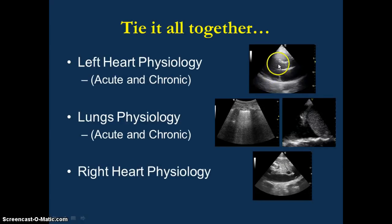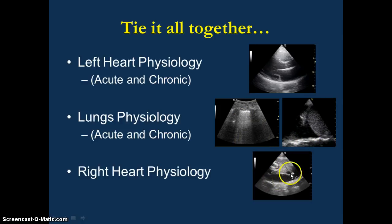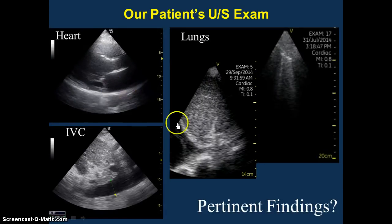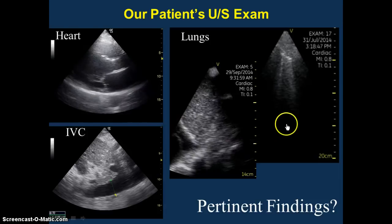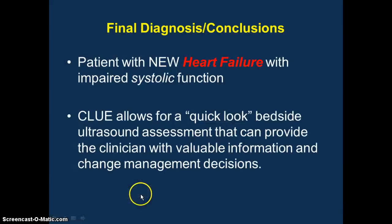Tying it all together: you can get an idea of left ventricular filling pressures and impaired systolic function. Whether or not this is a chronic thing — systolic or diastolic — you'll see left atrial enlargement. B-lines allow you to distinguish between someone who has pulmonary edema and a COPD exacerbation, along with pleural effusions, and then you can tie that in with what's going on in the right side of the heart. In our patient, he has clear evidence of left ventricular systolic dysfunction and left atrial enlargement, bilateral pleural effusions, pulmonary edema, and an enlarged IVC — suggestive of new heart failure with impaired systolic function. You can see how that would change management.